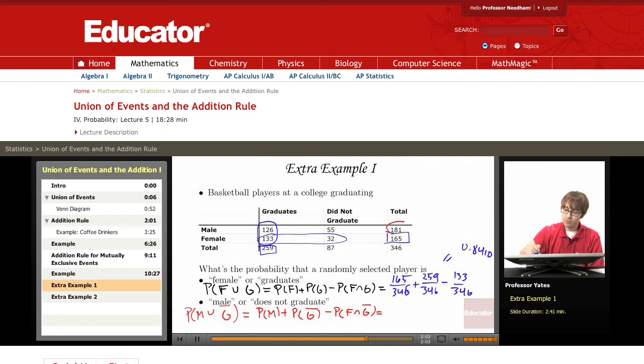We have a total of 181 males plus 87 who did not graduate. Now, where does this red row and this red column intersect? They intersect or overlap at 55.